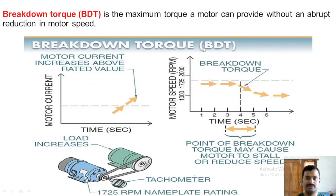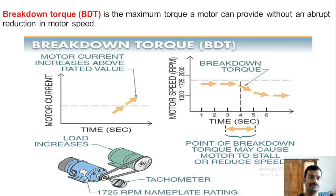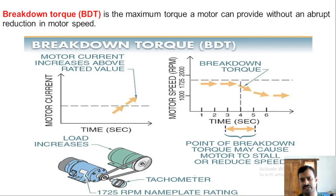Breakdown torque is the maximum torque a motor can provide without an abrupt reduction in speed. Every motor has a capacity limit for pulling load. If the load keeps increasing beyond a certain point, the motor speed starts to drop — the torque at that point is called breakdown torque. Loading beyond this limit causes the motor to approach standstill, which is a dangerous condition where coil temperatures rise and insulation may fail due to overheating.